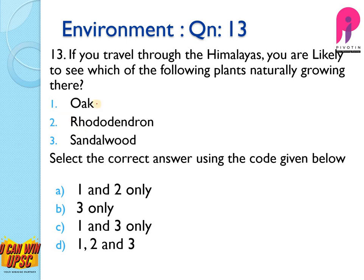Question 13: If you travel through the Himalayas, you are likely to see which of the following plants naturally growing there? Oak, rhododendron, and sandalwood — all three are found, but the presence of sandalwood in the Himalayas is negligible because sandalwood is actually found in moist deciduous forests.